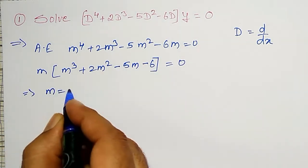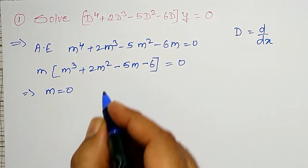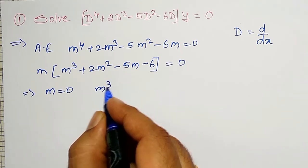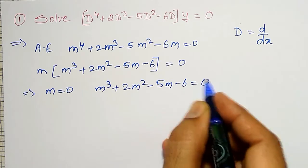Which implies, m equal to 0 is one of the root and other three roots are roots of this one. Therefore, m cube plus 2m square minus 5m minus 6 equal to 0.